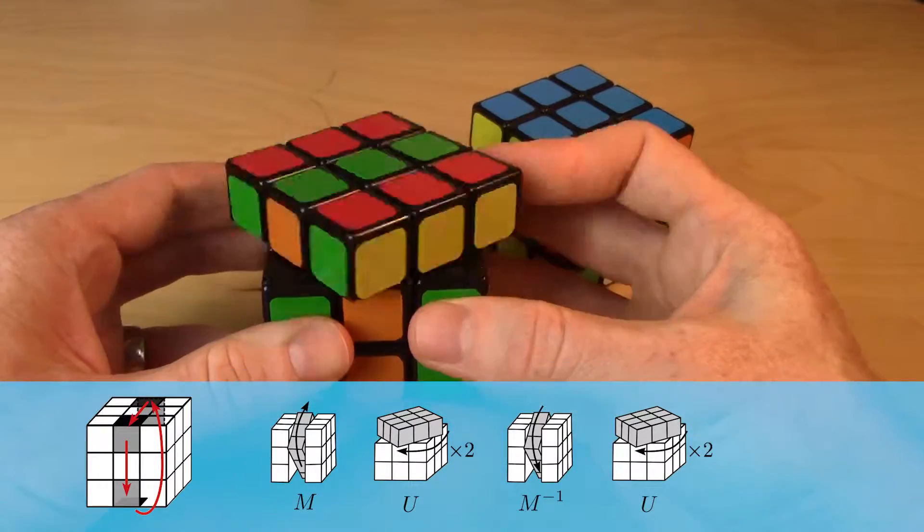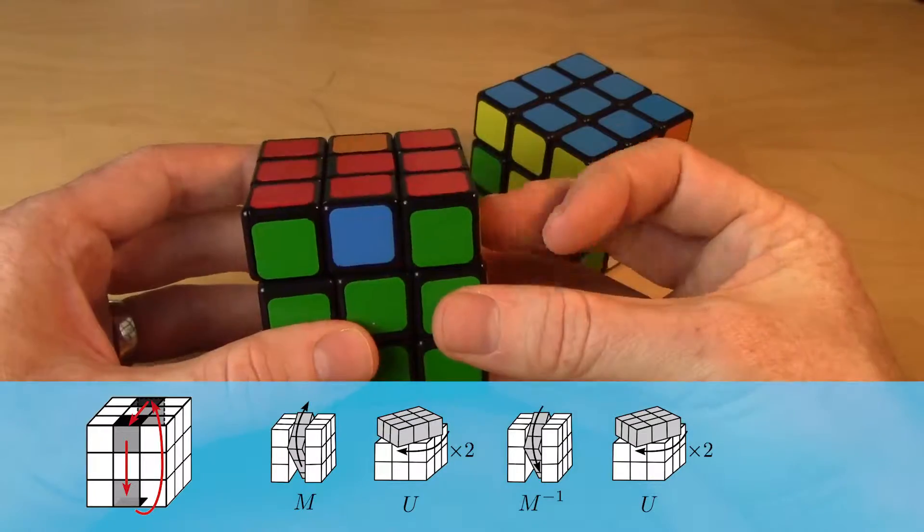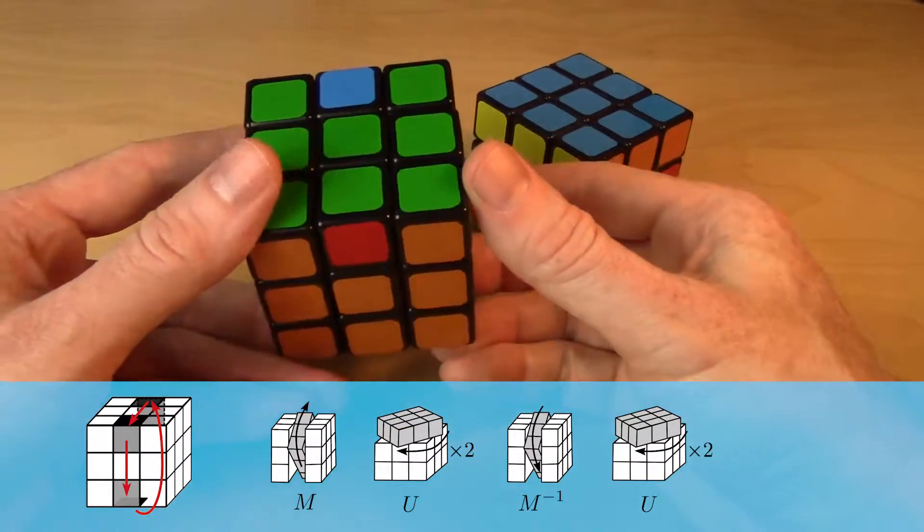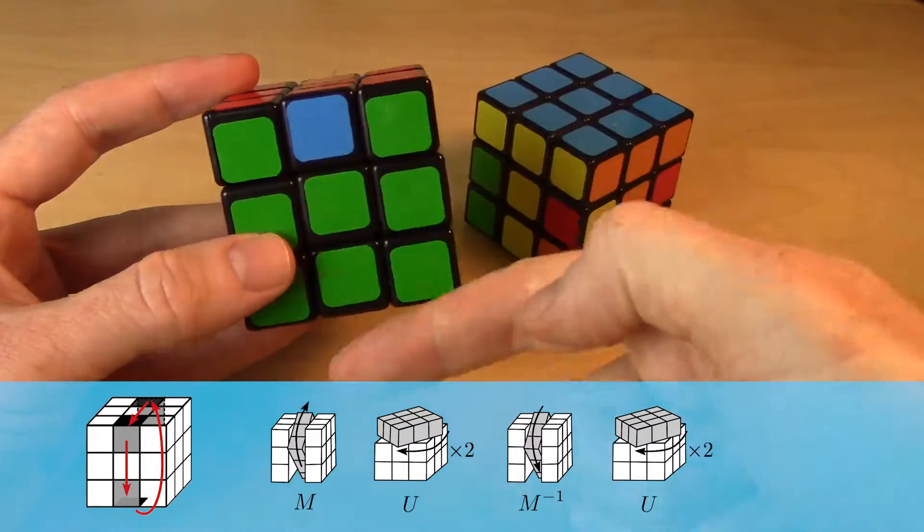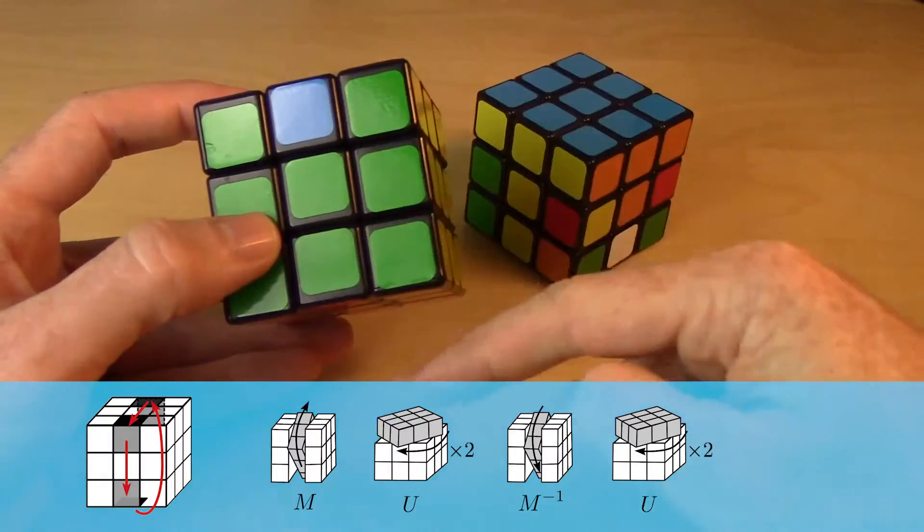If we throw up the middle layer, double twist the top, bring back down the middle layer, double twist the top, that cycles these three pieces around in this direction. So it dropped the one down here in front and then moved everything else around accordingly.